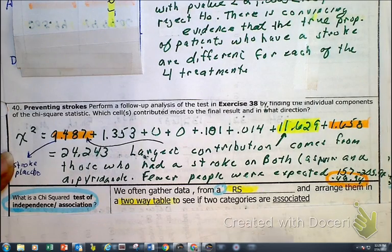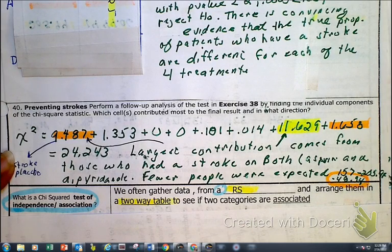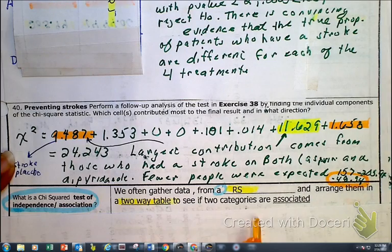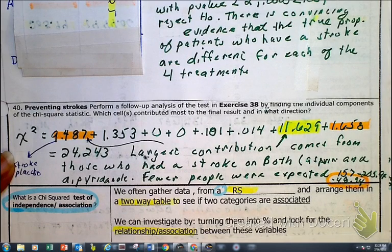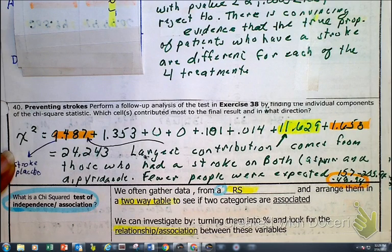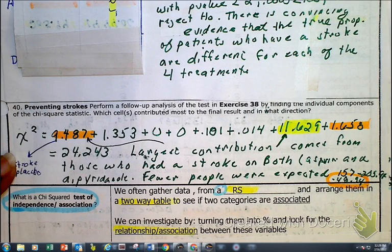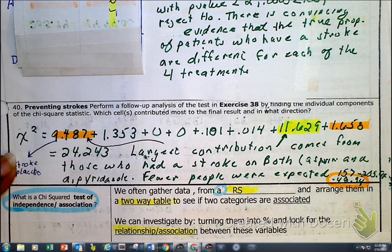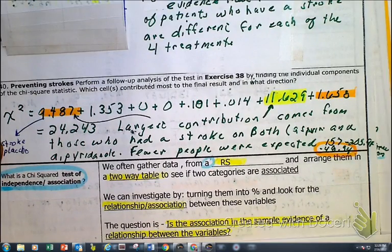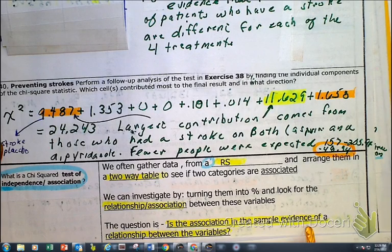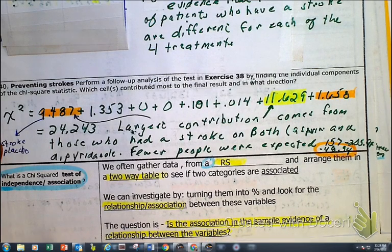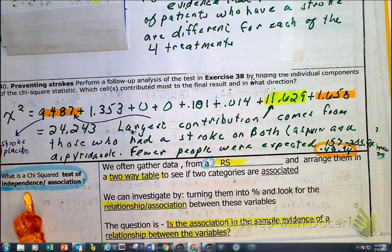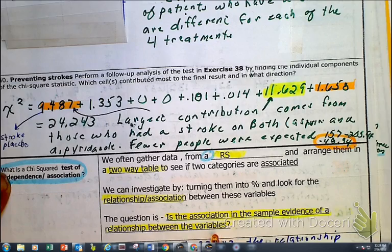So we often gather evidence and arrange them in a two-way table to see if the two categories are associated with each other. And here what's happening is that now we're looking into relationships or associations between the two variables. Is there an association between caffeine and hyperactivity? And here that begs the question, is the association in this sample evident of a relationship between the variables? So we're looking for an association, a relationship, or also the word, is it dependent?